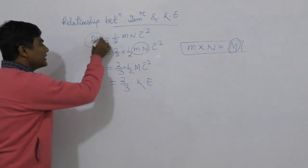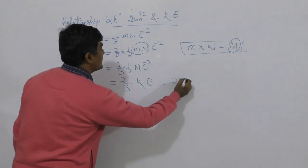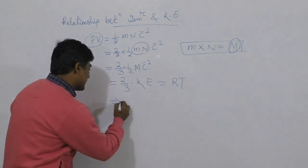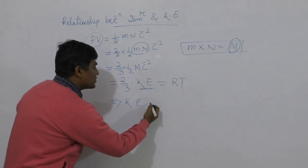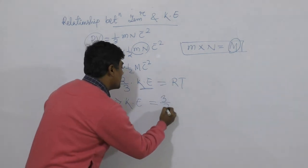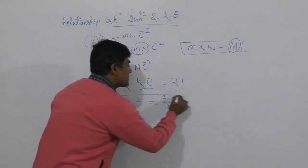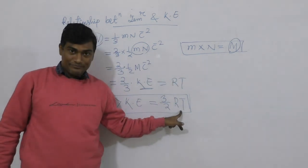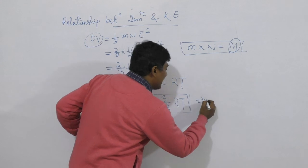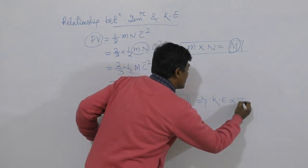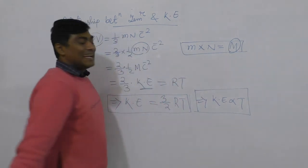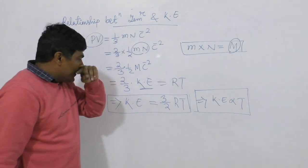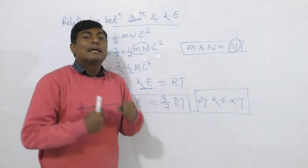This is 2 by 3 into KE. For one mole of gas, PV is nothing but RT. So we can write kinetic energy is equal to 3 by 2 RT. This is the relationship between kinetic energy and temperature. From this, higher temperature means higher kinetic energy — kinetic energy is directly proportional to temperature.